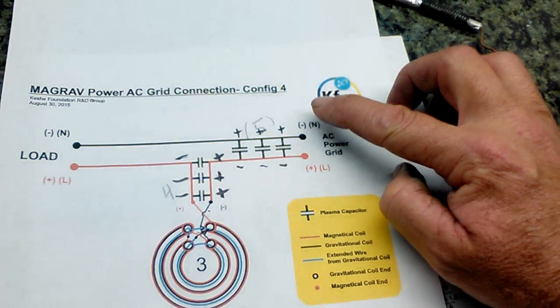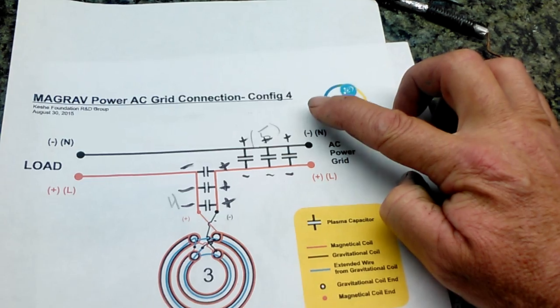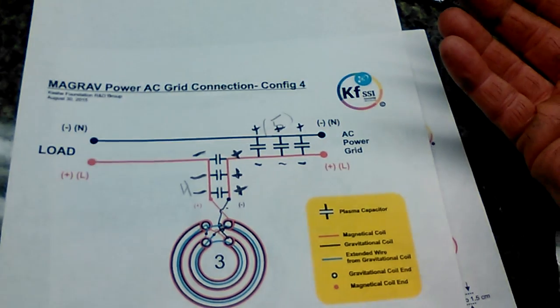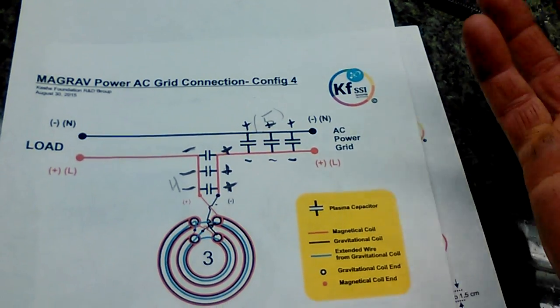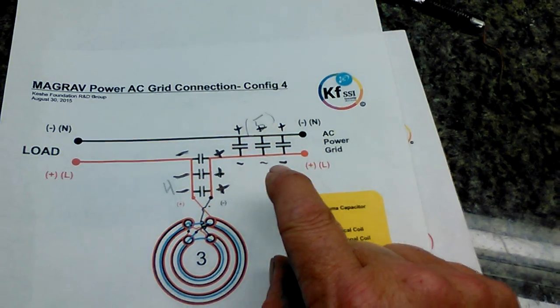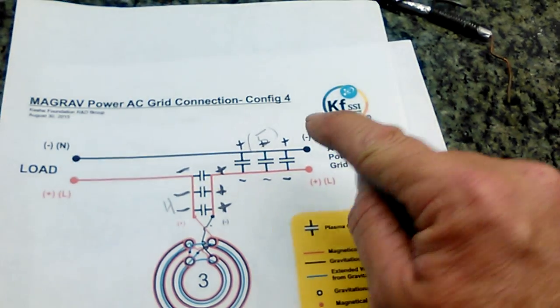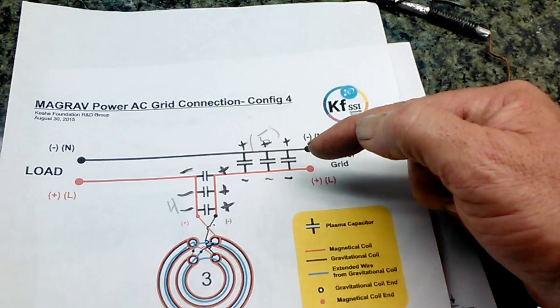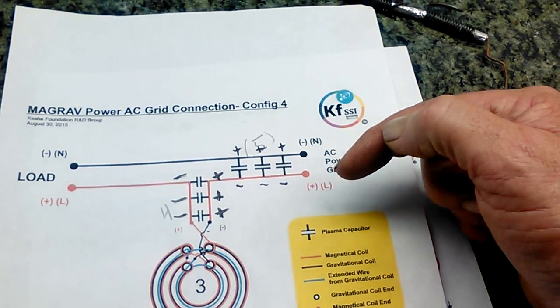But the way I understand it is the positive of the capacitor will always run to the neutral or negative line. And it kind of goes in theory that the positive of the capacitor is going to go to the neutral line and the negative of the capacitor is on the positive line.